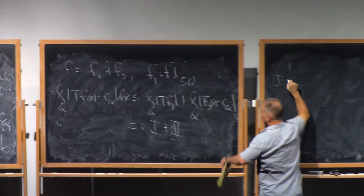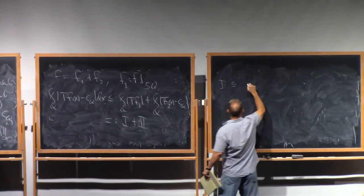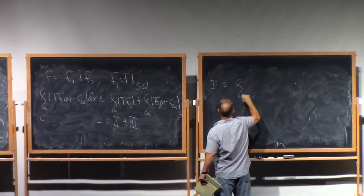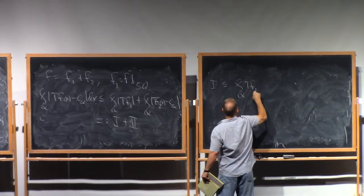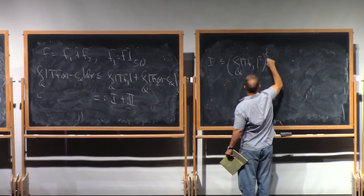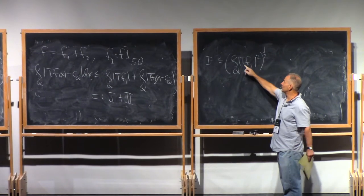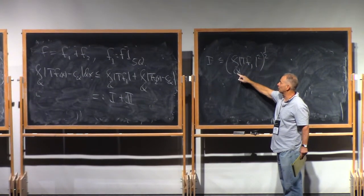So term 1 by Cauchy-Schwartz, this is less than or equal to the average, the L2 average. And now we use that T is bounded on L2. At this point, just integrate over all of R^n.